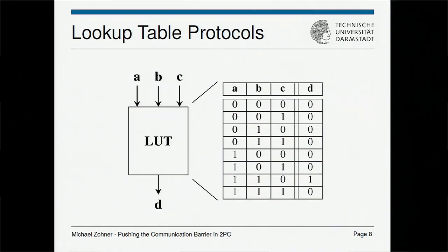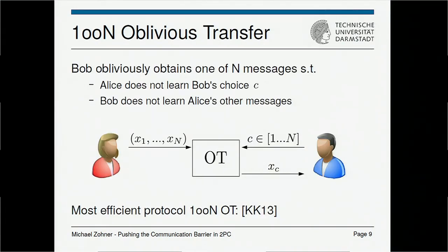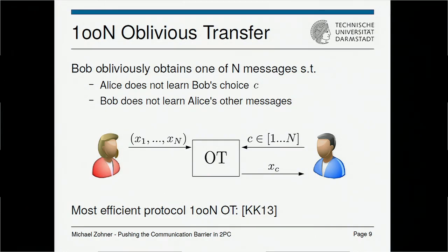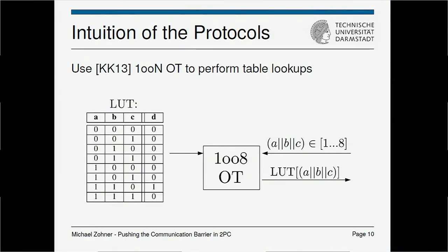Our key building block is the 1-out-of-n oblivious transfer protocol, which we heard about in the first talk of this session. In 1-of-n OT, Alice has n messages and Bob wants to obtain one of them, such that Alice does not learn which message Bob chose, and Bob does not learn any message besides the one he selected. The most efficient protocol for this is KK13, which scales very well as n increases. The rough intuition is that one party prepares a lookup table, and the second party determines via local computations which row to access, then uses oblivious transfer to perform the lookup.